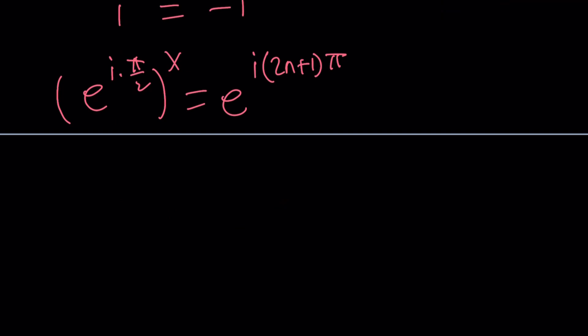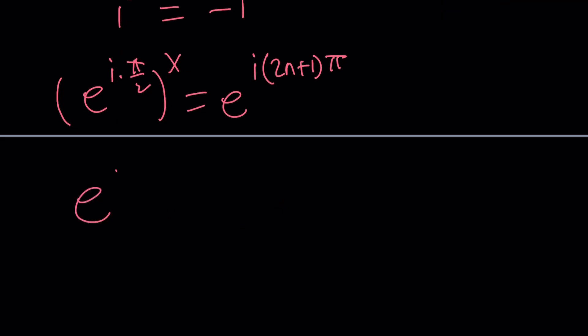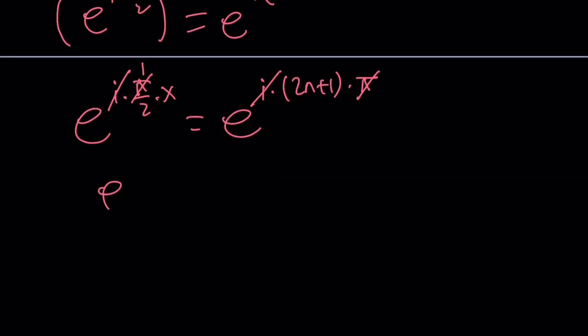And then the negative 1 will be replaced with e to the power i times 2n plus 1 pi. Awesome. If you multiply the exponents, you're going to get e to the power i times pi over 2 times x, and then e to the power i times 2n plus 1 times pi. Notice that we can get rid of the i and the pi. And that's going to leave us half of x here. e to the power x over 2 equals e to the power 2n plus 1. Notice that we don't really have to align both sides, and even if you did, you would get the exact same answer.